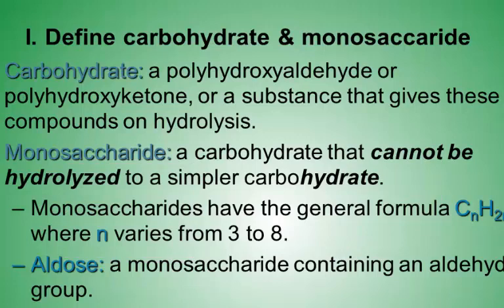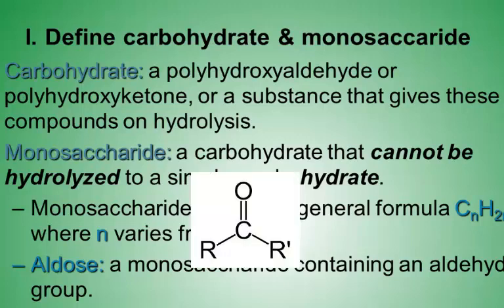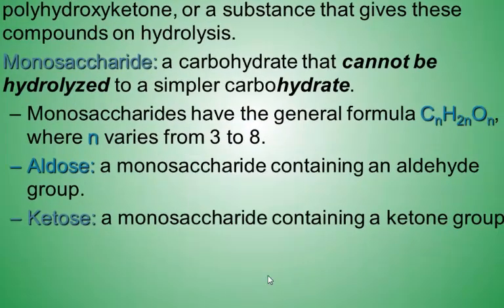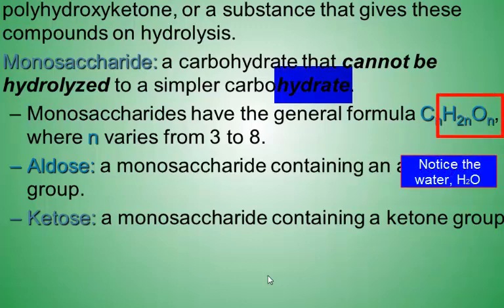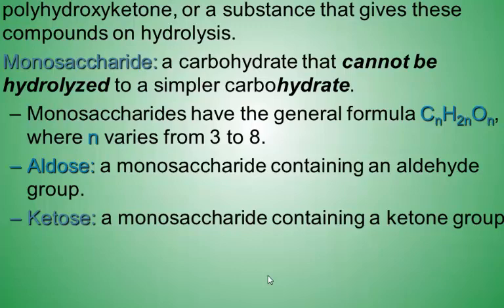Polyhydroxy ketone is very similar, but instead of an aldehyde there's a ketone. This would also imply there are many carbons in this compound. The simplest carbohydrate is a monosaccharide. Monosaccharides have a general formula CH₂O)ₙ — from this formula you can see there are just as many oxygens as there are carbons.